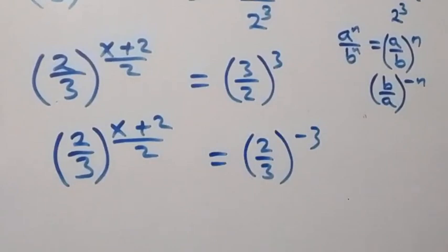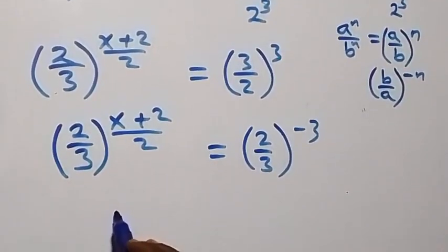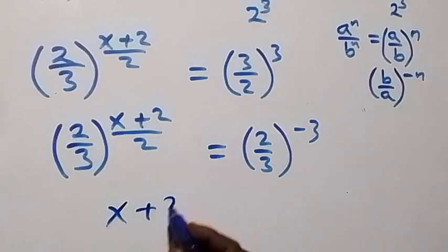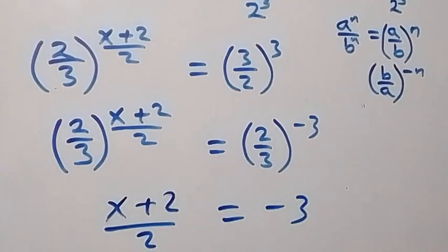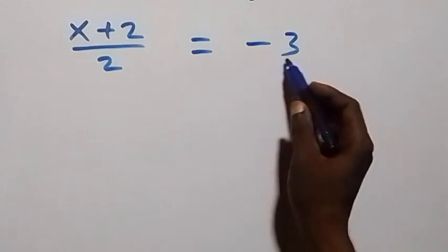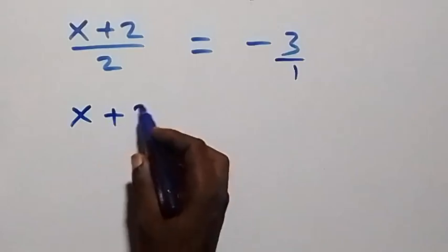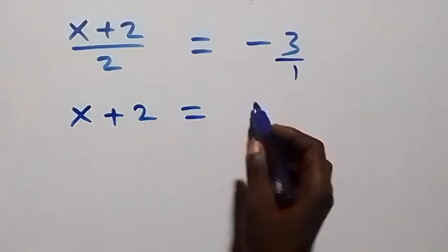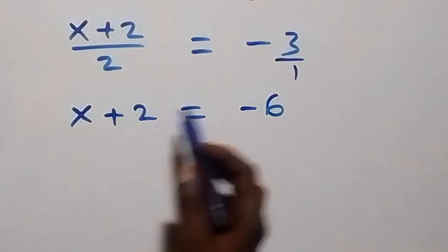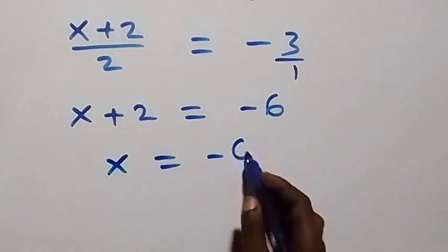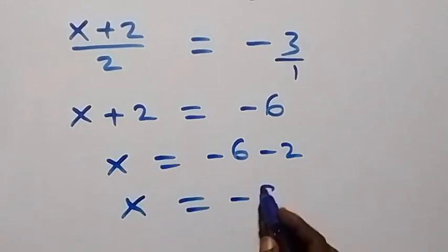From here, we equate the exponents: (x plus 2) over 2 equals minus 3. Cross-multiplying, x plus 2 times 1 equals minus 3 times 2, that is minus 6. Therefore x plus 2 equals minus 6, which implies x equals minus 6 minus 2, giving us x equals minus 8.